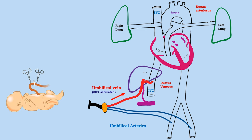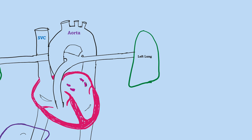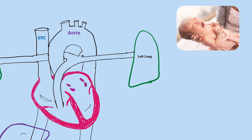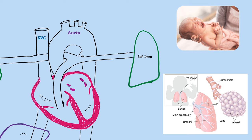After birth, there are two major changes in the fetal circulation. First, umbilical cord cutting, and second, baby crying. After umbilical cord cutting, the baby's connection is cut from the placenta. The umbilical artery constricts first, so blood does not drain out from the fetus. After the umbilical artery constricts, the umbilical vein transfers some blood — about 80 to 100 ml — from the placenta into the fetus. That is why after delivery, cord clamping is delayed. After birth, when the baby cries, the lungs expand, as you can see here.